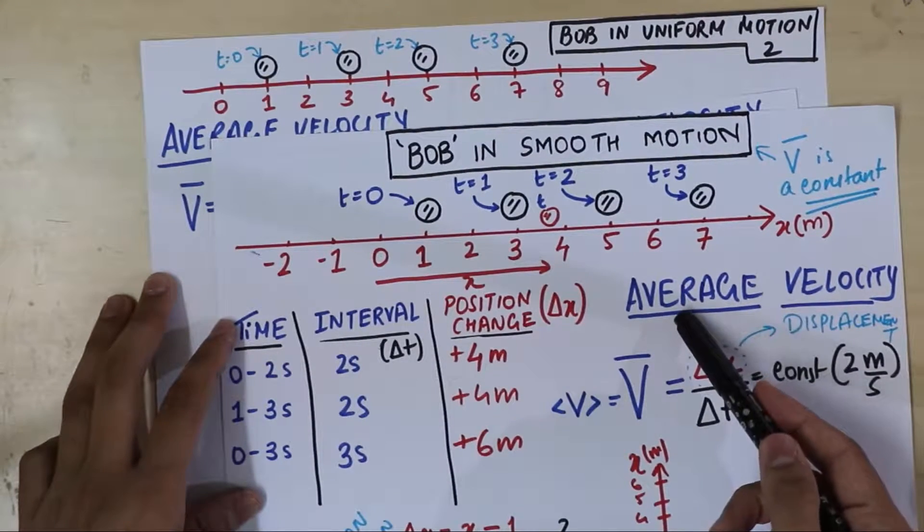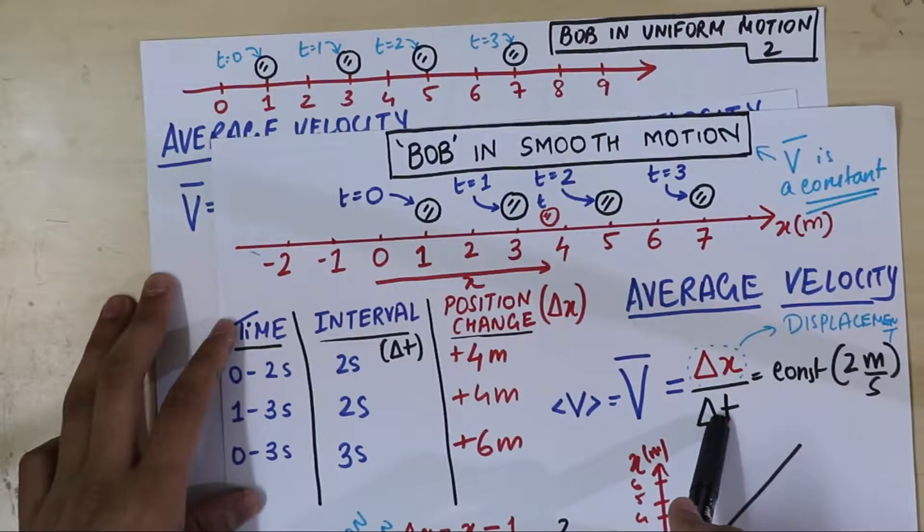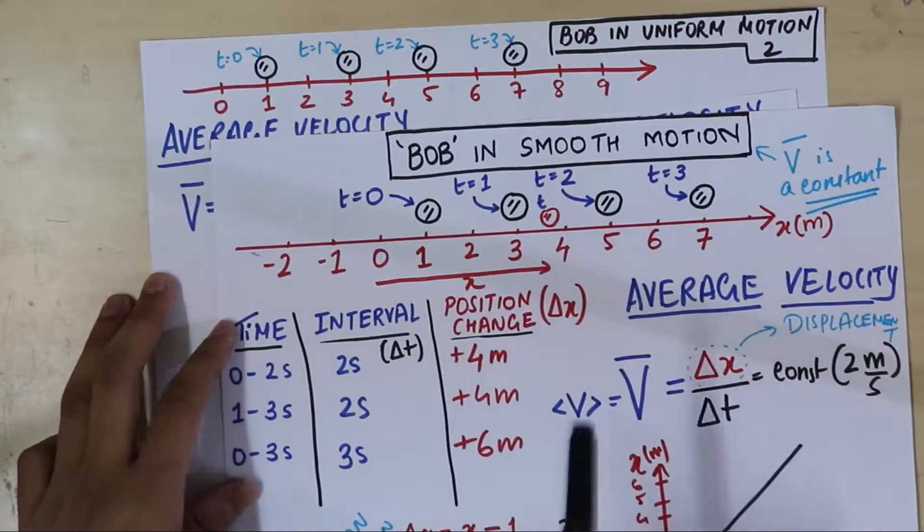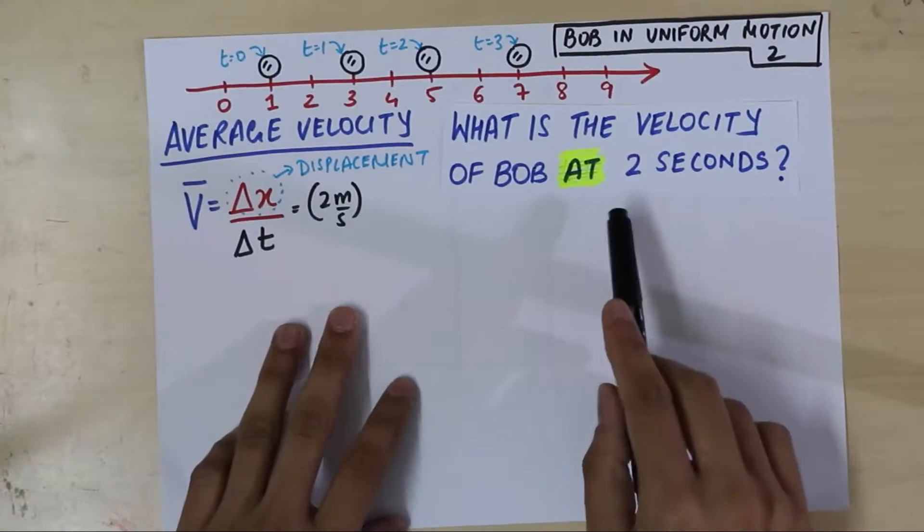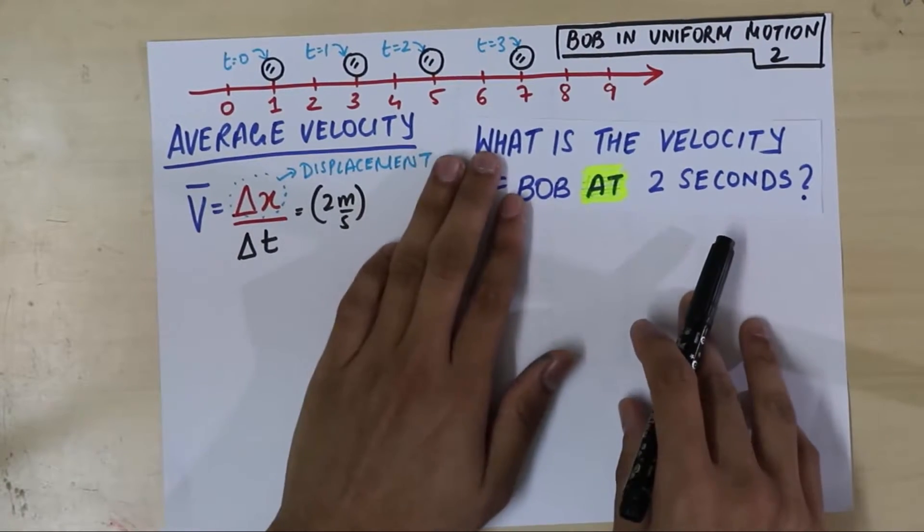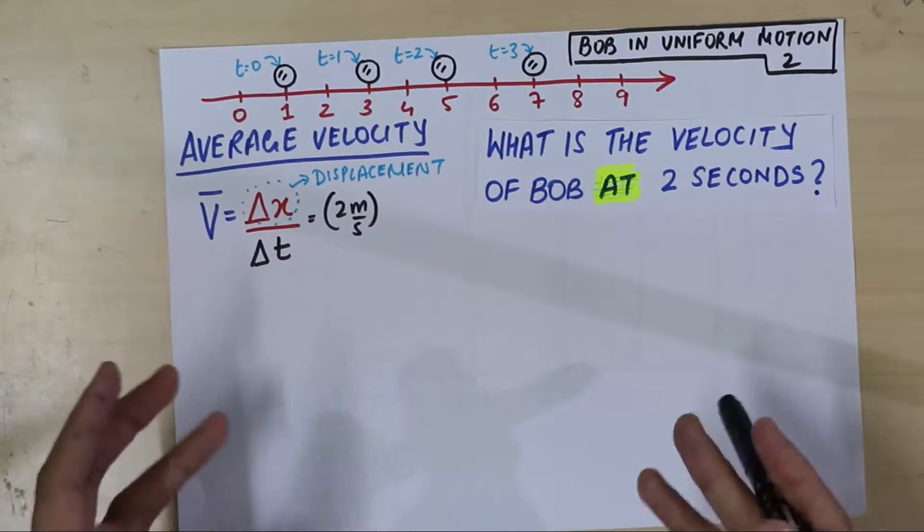In fact, that's why it's called as average. Whenever you divide by a time interval, that's when we call it as average value. Anyway, that's not important. What is now important is, I am not giving you an interval. I am asking you velocity at 2 seconds. So, what would you do?